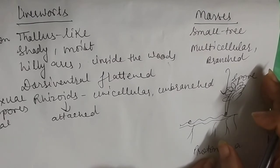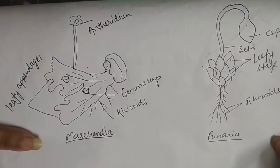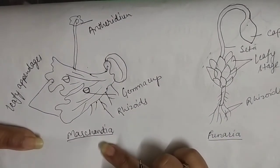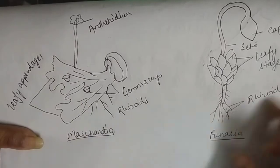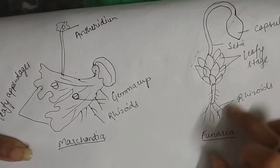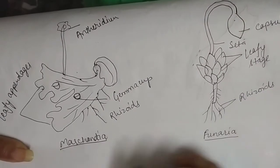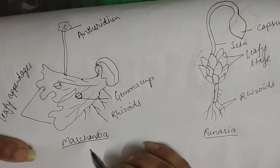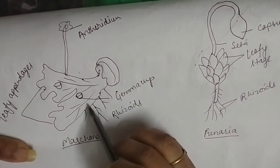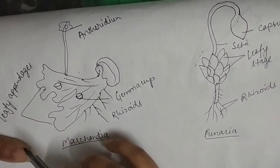Now I will show you the diagram. There are two structures: first is Marchantia, which is a liverwort — you can see the liver-like structure — and the other is the moss, with the example of Funaria, which looks like a small tree or small plant-like structure. In Marchantia, you can see a stem-like structure on which leaf-like veins are present, called leaf appendages. Rhizoids help anchor the stem-like structure.